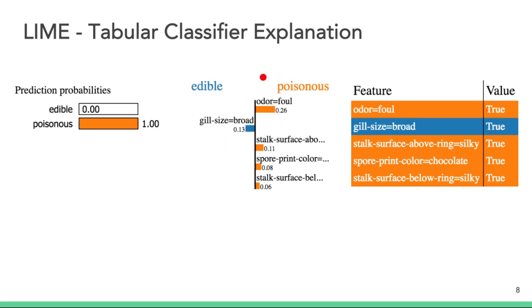The middle graph provides feature importance visualization. The most important feature is on top, followed by the second most important feature, and so forth. The color code represents whether or not the feature supports the prediction. In this case, orange features support the prediction of poisonous, and blue features support the prediction of edible.